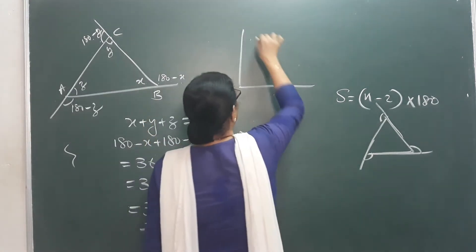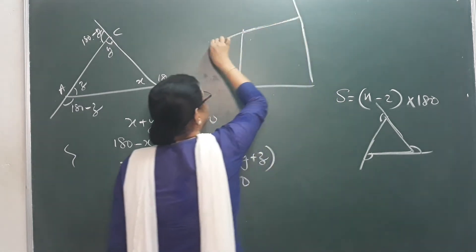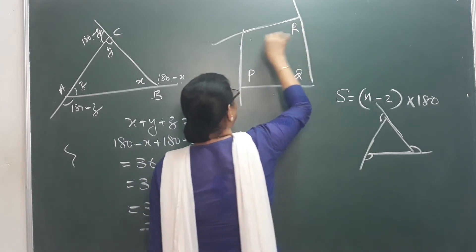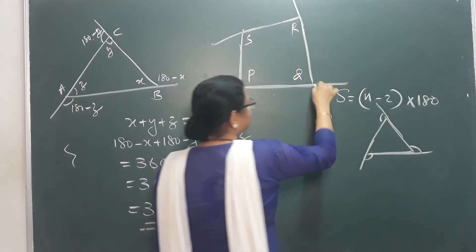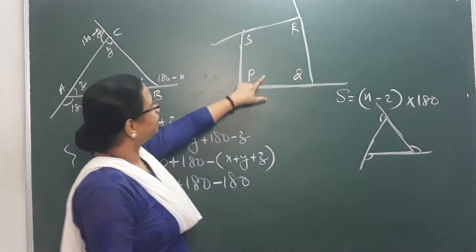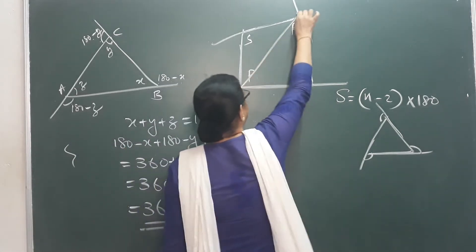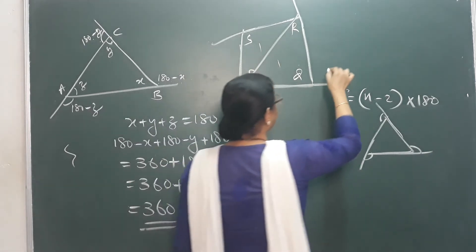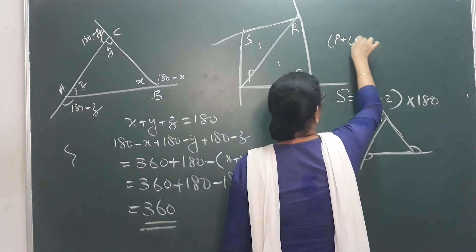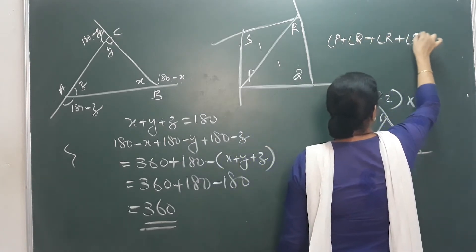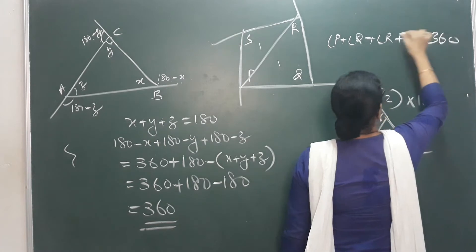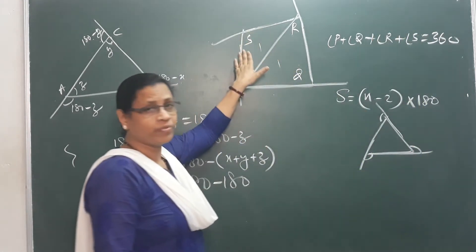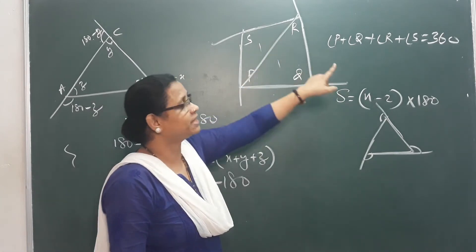Now let's verify this for a quadrilateral with 4 sides. The inner angle sum of a quadrilateral is 360, because it can be split into two triangles: 180 plus 180 equals 360. That is the angle sum property of a quadrilateral. The outer angles are labeled P, Q, R, S. We can find the outer angle sum for this quadrilateral as well.